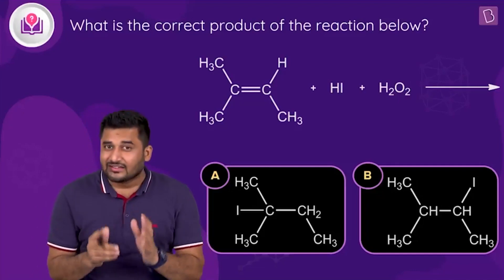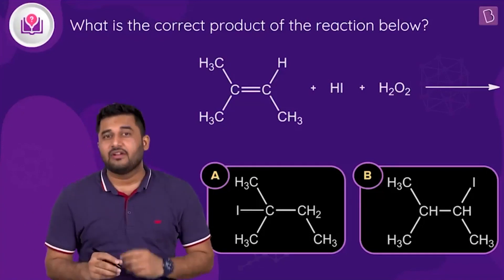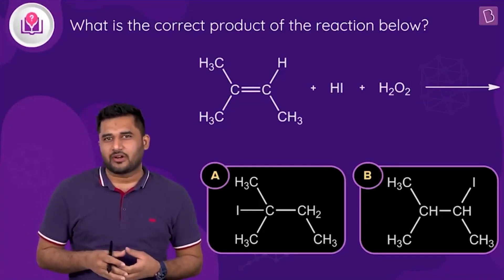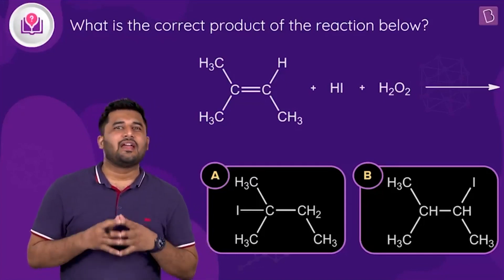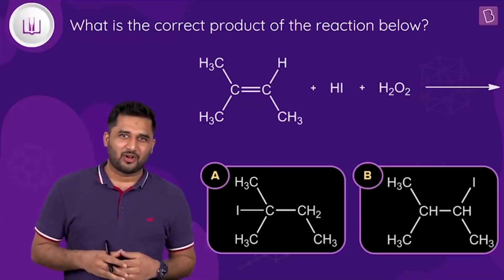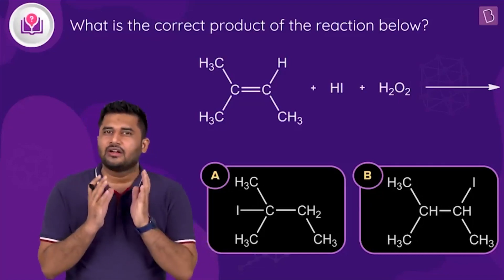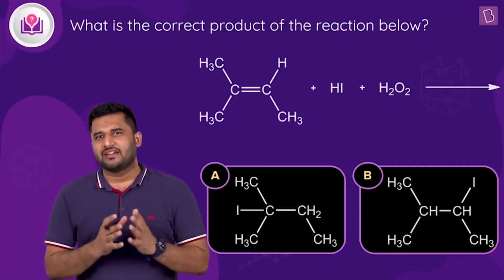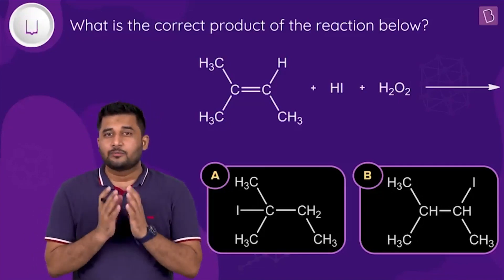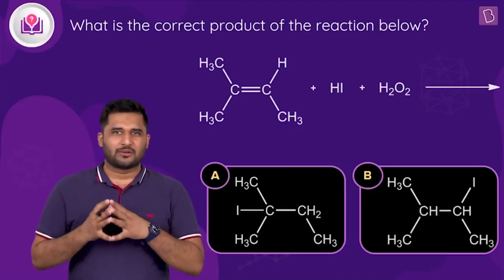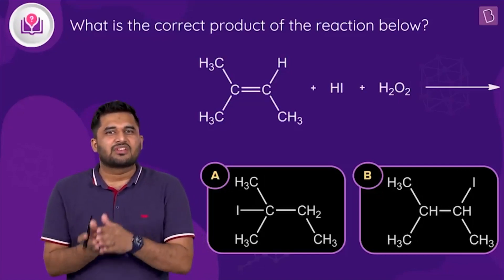Is the Kharash effect present in this reaction or not? When you react HI with an alkene in the presence of peroxide, the Kharash effect is not observed — in fact, the reaction goes by Markovnikov's addition. The question is why. For the reaction to proceed through free radical addition, as observed in the Kharash effect, the propagation step needs to be exothermic.